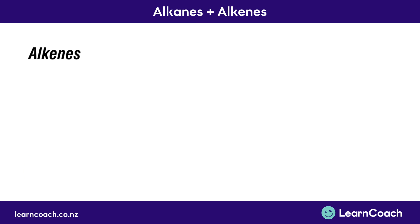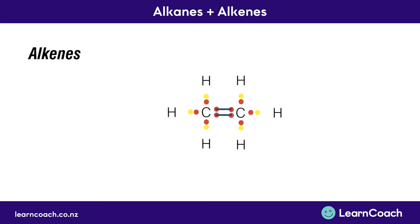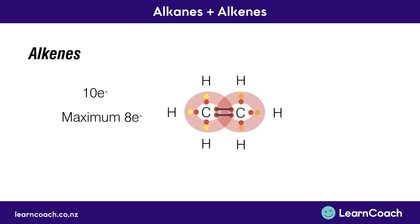Now we're going to talk about alkenes. If this is our carbon, we know it's got four valence electrons, and hydrogens have one. Now if we add in a second carbon and put all these bonds together, then add a double bond between the carbon and carbon, you can see we've now got ten electrons around each carbon — so that's not going to balance, because we have a maximum of eight electrons in our second shell. So we need to drop two electrons by removing one of the hydrogens on one side. Now there are eight electrons around the left-hand carbon. We do the same on the right-hand side, dropping that hydrogen, and now we've got eight electrons around both carbons, so both are balanced and stable.